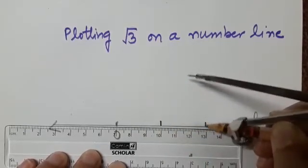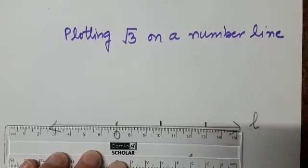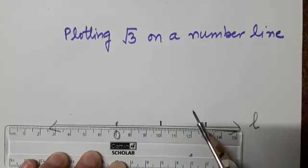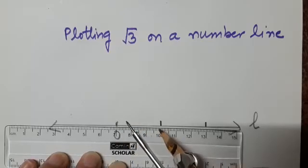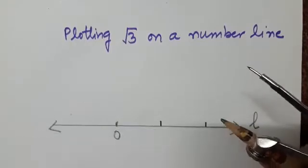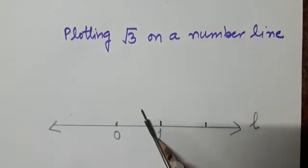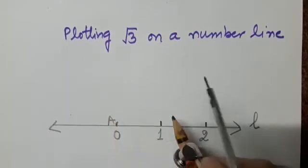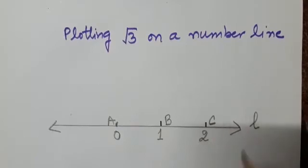I am marking two points on the right hand side of 0. Each point is at a distance of 3 centimeters from each other, taking 3 centimeters as one unit. You can set one unit as per your convenience. So this point is 1 and this point is 2. Let us represent these points: this is A, this is B, and this point is C.